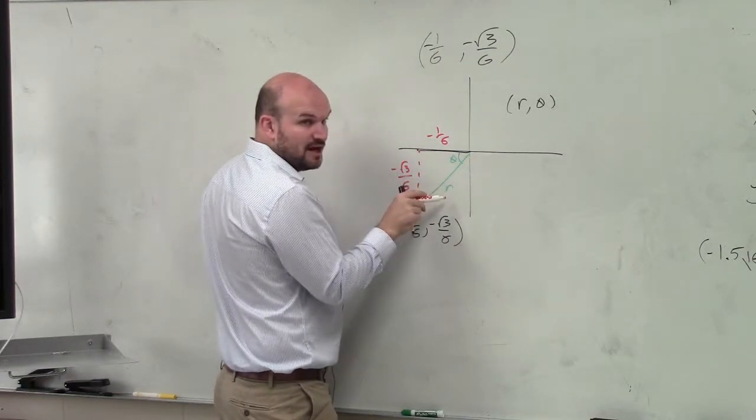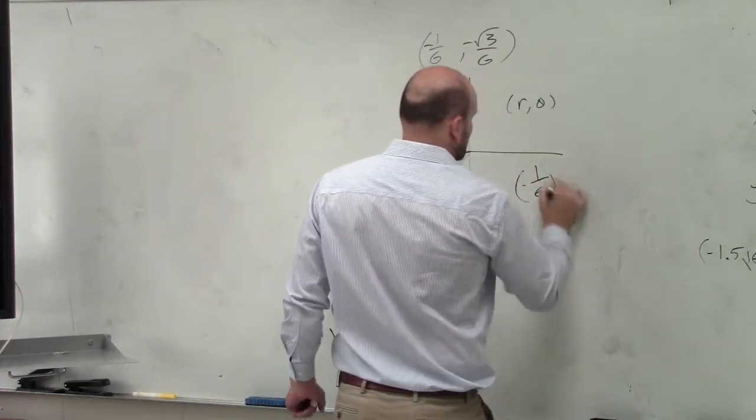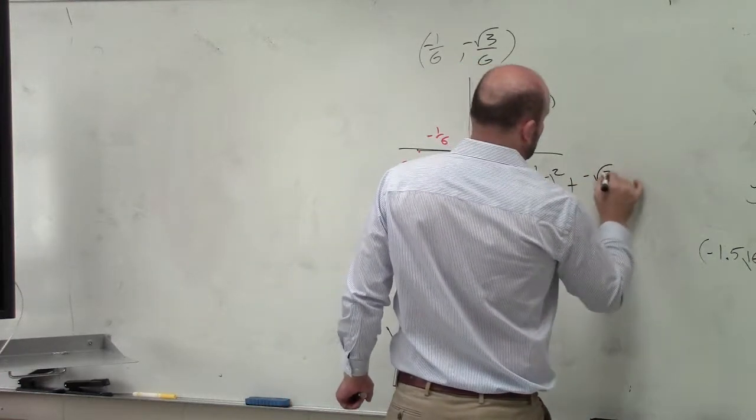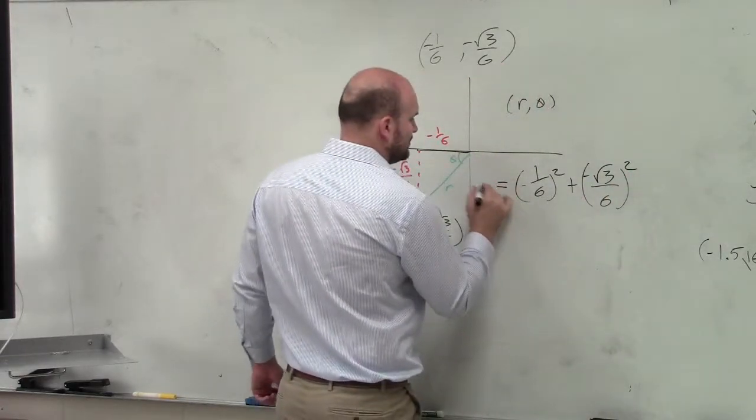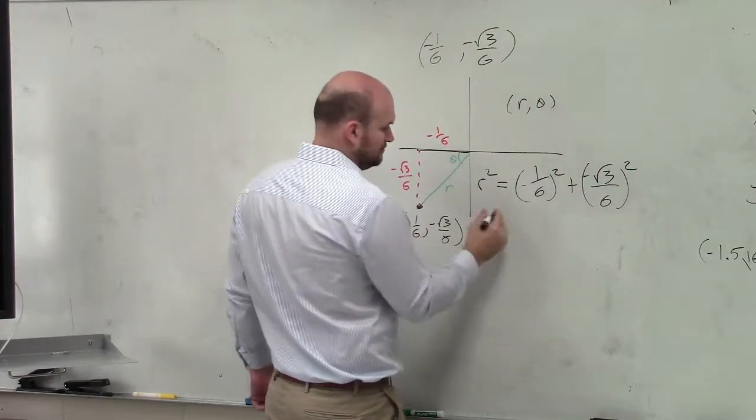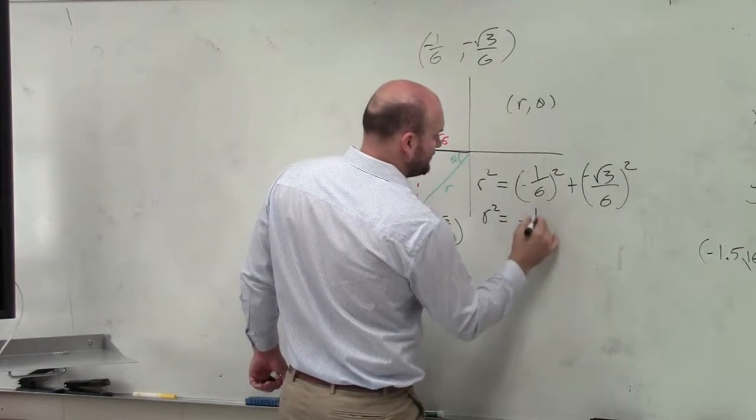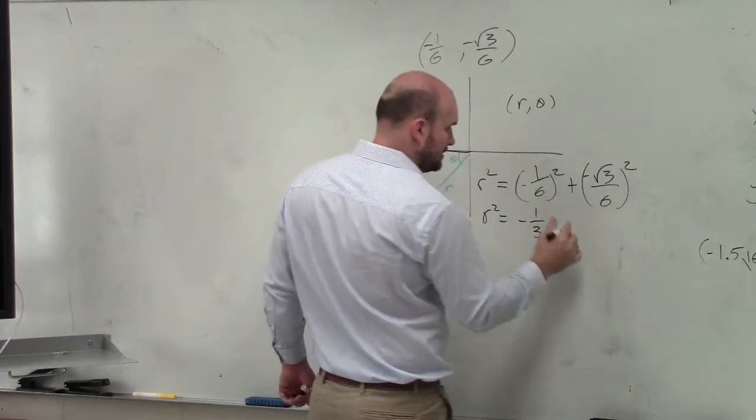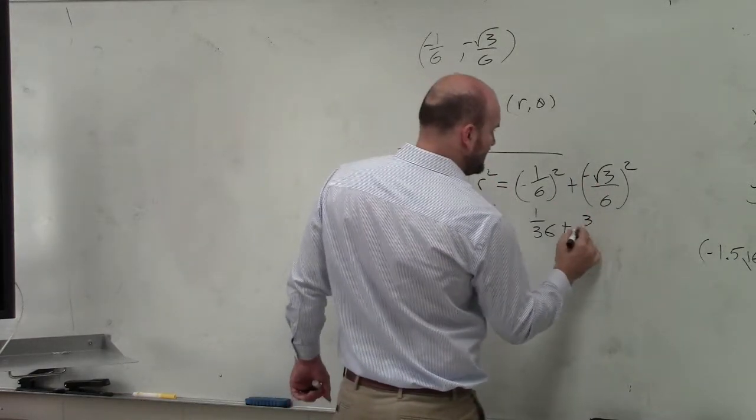So do I have enough information to find r? Yeah, Pythagorean theorem, right? So I do negative 1 sixth squared plus negative square root of 3 over 6 squared equals r squared. Let's see, that's going to be negative 1 over 36 plus, oops, that's positive.